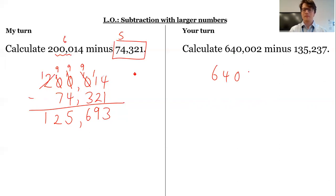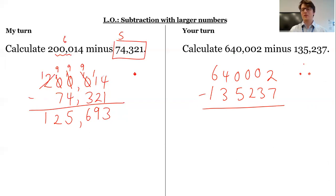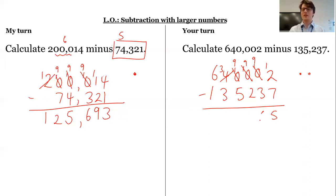Again, I'm thinking to myself, oh dear. Line this up correctly. 2 subtract 7 I can't do, so I'm going to have to go to my tens — hundreds, thousands, ten-thousands. So now I've got 10 ten-thousands. Take one; now I've got 10 hundreds. Take one, regroup it into 10 tens. Finally I can take one of my tens, regroup it into 10 ones. 12 subtract 7 is 5. 9 subtract 3 is 6. 9 subtract 2 is 7. 9 subtract 5 is 4. 3 subtract 3 is 0 — I don't need to regroup there, that's fine. And 6 subtract 1 gives me 504,765.